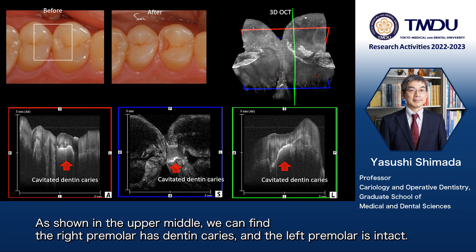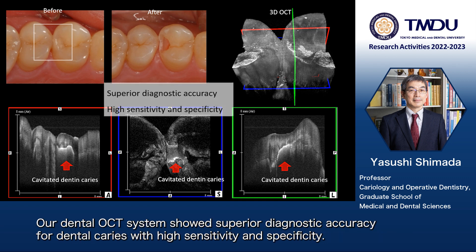As shown in the upper middle, we can find the right premolar has dentinal caries and the left premolar is intact. Our dental OCT system shows superior diagnostic accuracy for dental caries with high sensitivity and specificity.